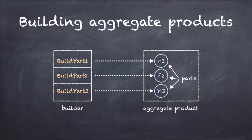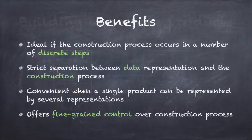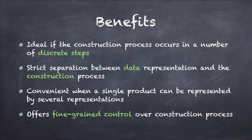The Builder pattern offers a number of benefits over straight-up construction of objects using the new keyword. First, the Builder pattern is ideal if the construction process occurs in a number of discrete steps instead of all in one go. The builder creates a new product part each time it's called and maintains all intermediate state. When the product is finished, the client can retrieve it. Second, this pattern establishes a strict separation between data representation and the construction process. All the complex code for constructing the product is hidden away in the builder class.